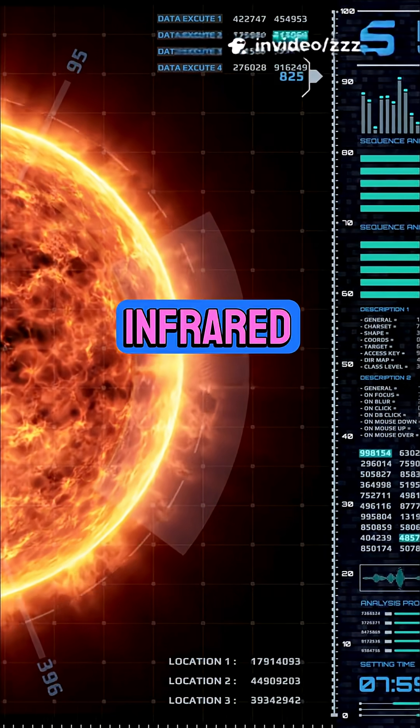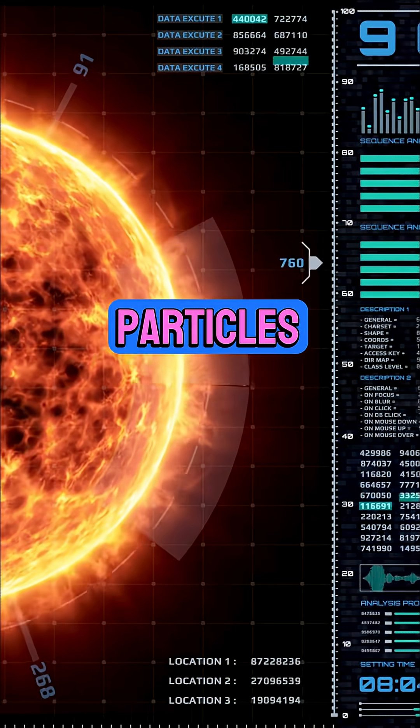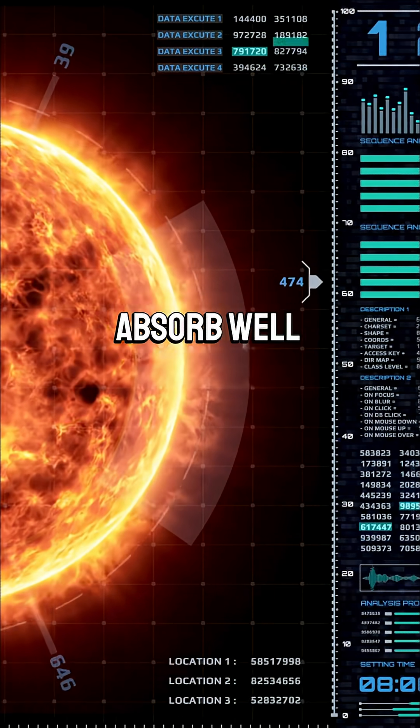The sun heats Earth with infrared radiation. Radiation means heat transfer by infrared waves—no particles needed. Black surfaces absorb well.